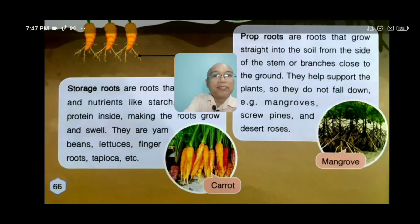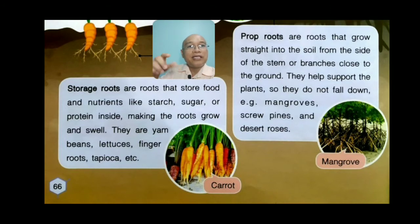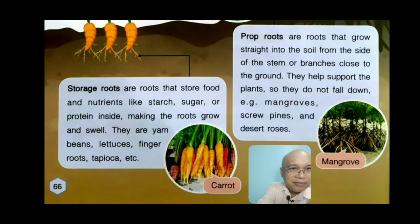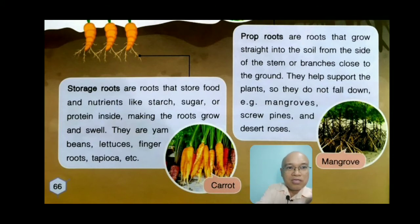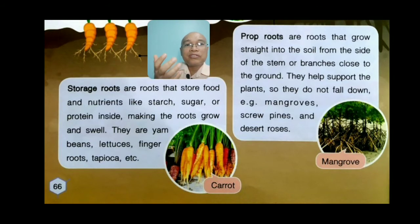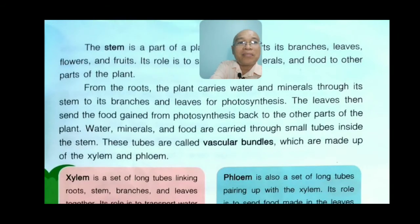Prop roots are roots that grow straight into the soil from the side of the stem or branches close to the ground. They help support the plant so it does not fall down. Examples are mangroves, screw pines, and desert roses. Storage roots are roots that store food and nutrients like starch, sugar, or protein inside, making the roots grow and swell. Examples are yam beans, finger roots, tapioca, and others.